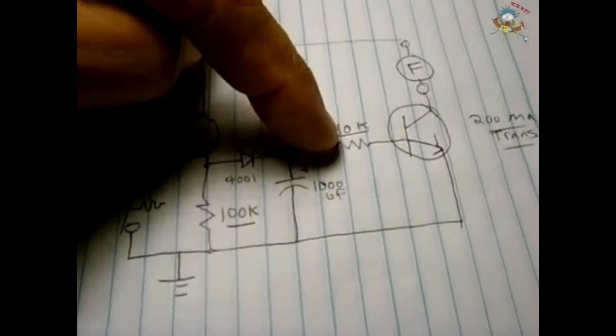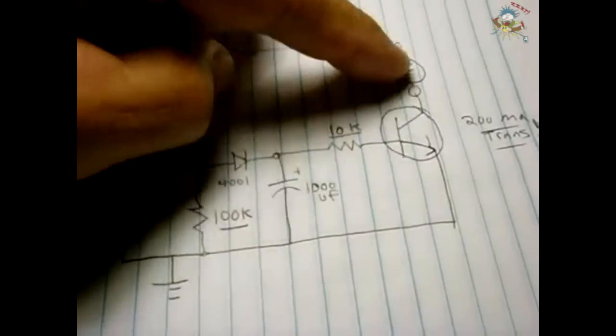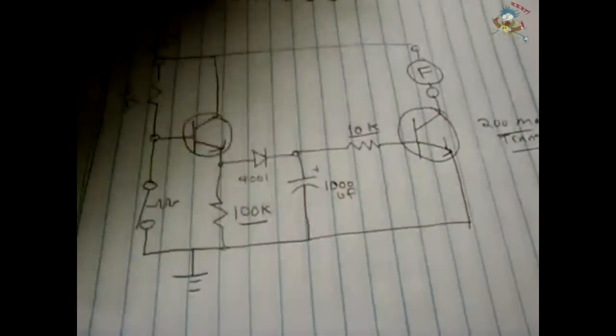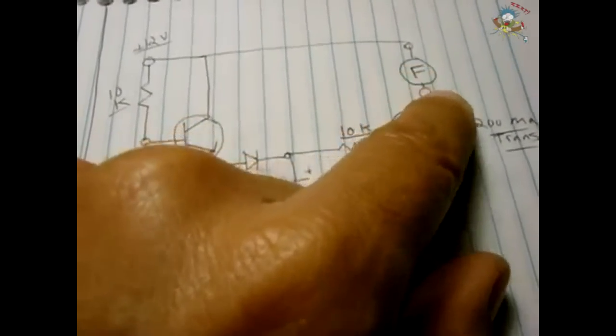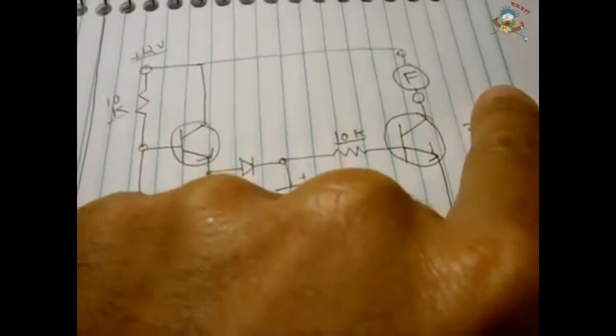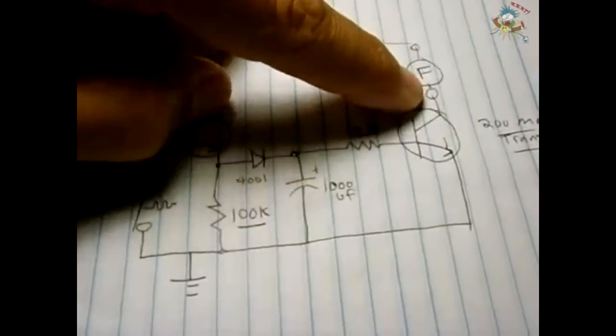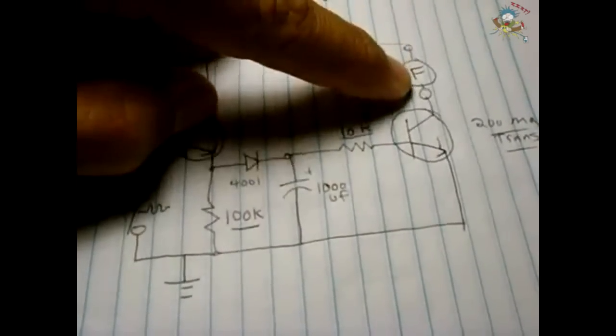With this particular circuit the fan will come right on quick. Towards the end where this is getting ready to lose voltage here to shut the transistor off, it might fade the fan out a little bit before it clicks off. If you don't like that, that's not a problem.